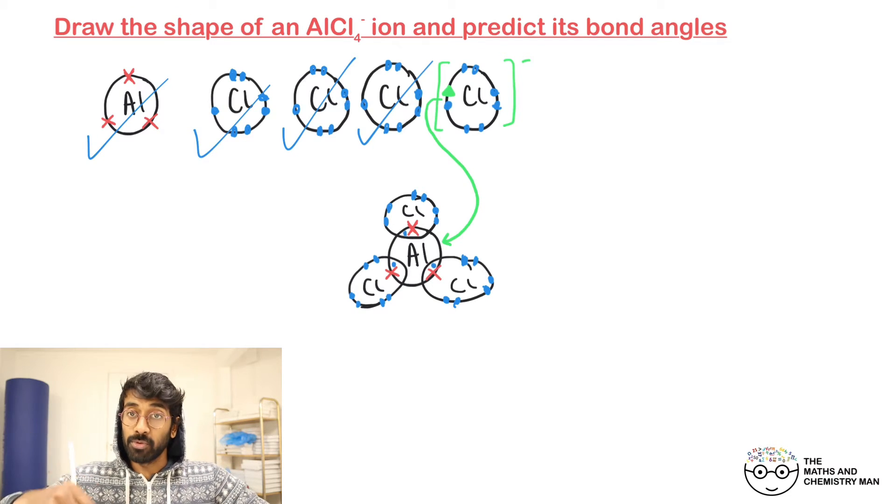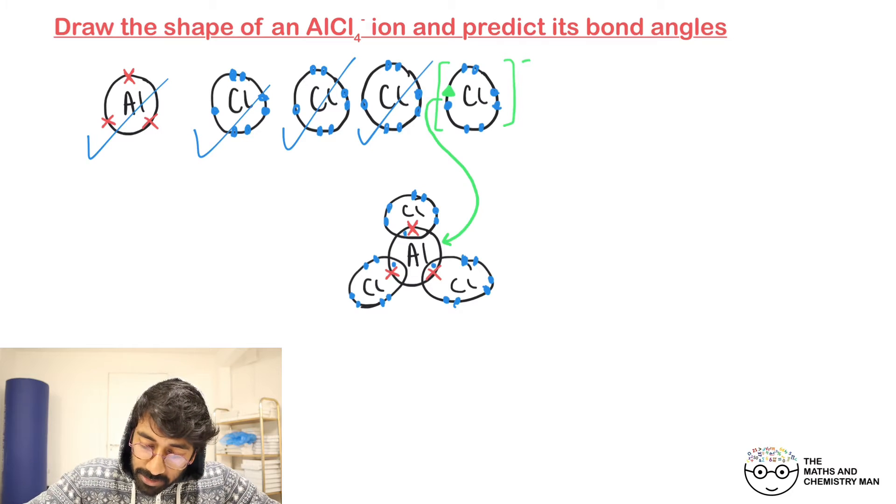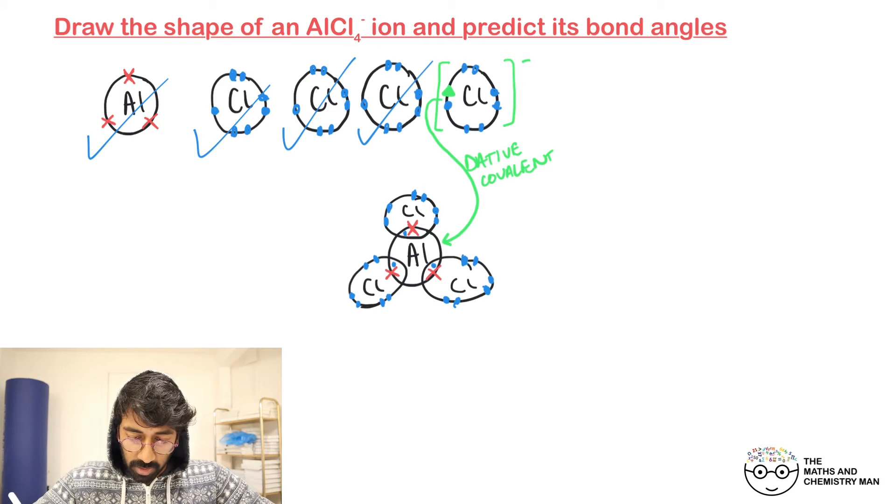This is called a dative covalent bond, or a coordinate bond as you might have heard as well.